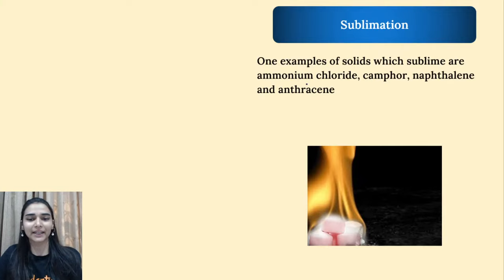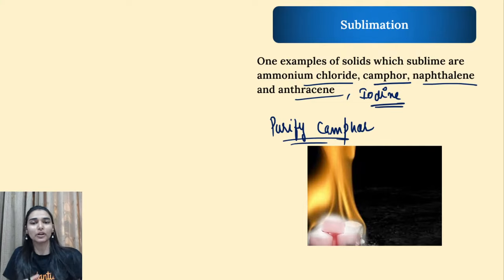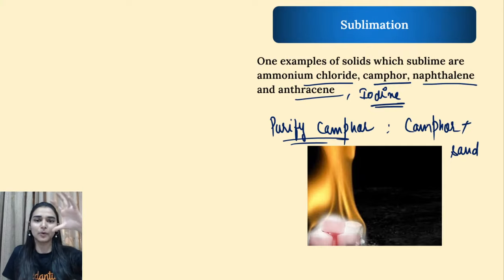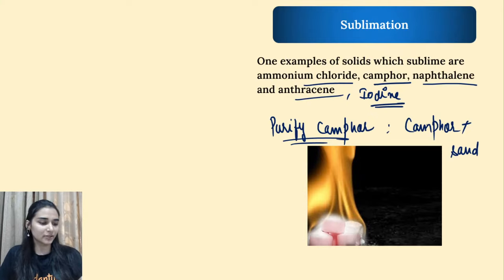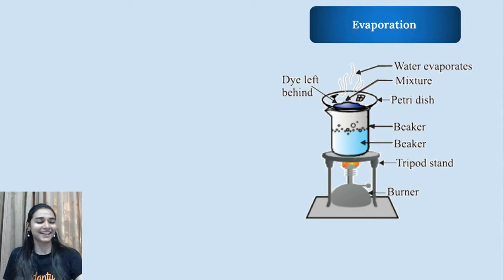Some solids with sublimable tendency include ammonium chloride, camphor, naphthalene, anthracene, and iodine. You can separate mixtures of these. For example, to purify camphor mixed with sand — on sublimation, camphor vapors rise to the top of the flask and sand is left behind.